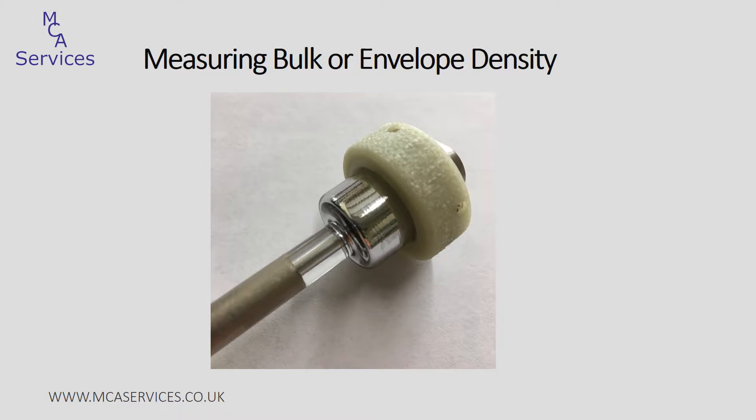At the end of the low pressure analysis the penetrometer is now filled with mercury and we'll weigh it again at this stage. The various masses — the sample mass, the mass of the assembled penetrometer without mercury, and again with mercury — are all entered into the Autopore software and the bulk density of the sample is calculated automatically.